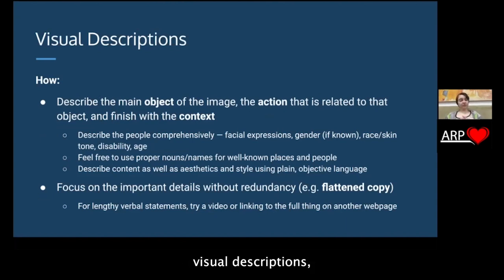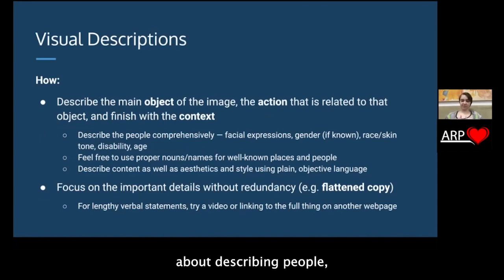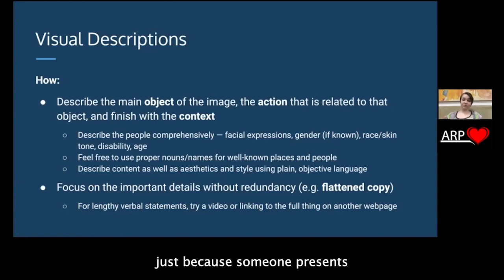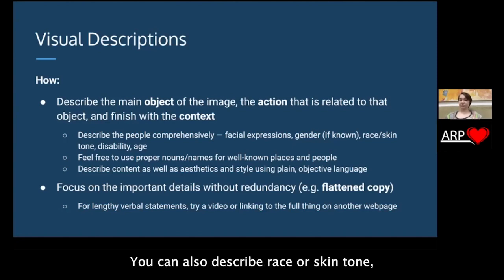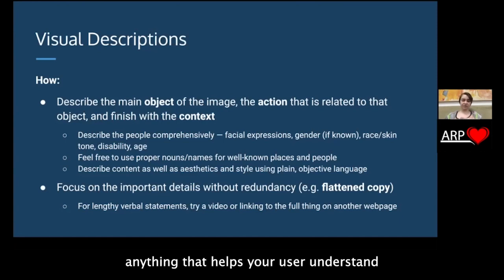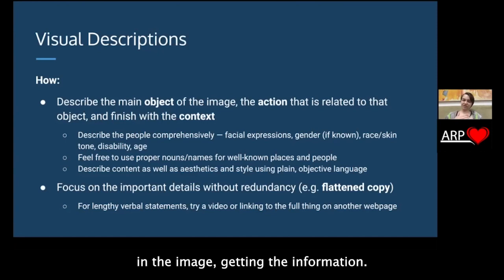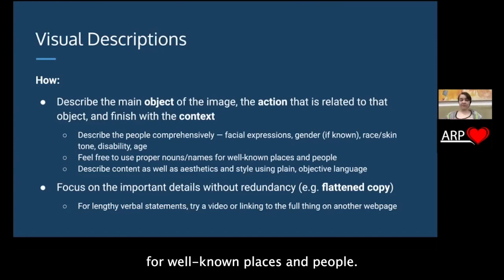When you are doing visual descriptions, you want to be most comprehensive about describing people — their facial expressions, their gender. If you know it, don't assume just because someone presents masculinely, femininely, or androgynously that that directly correlates to their gender identity. You can also describe race or skin tone, disability, age — anything that helps your user understand what is happening in the image and get the information.